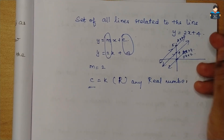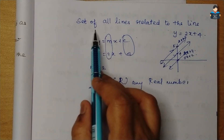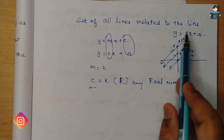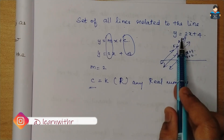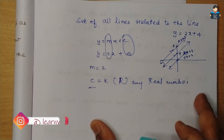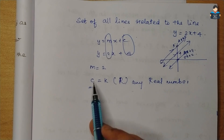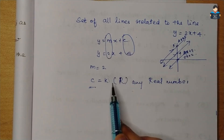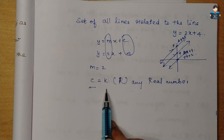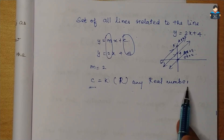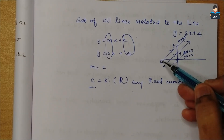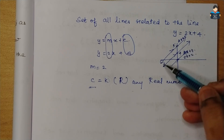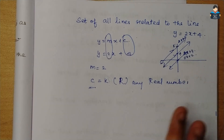Any real number you substitute in place of c will give a line parallel to y = 2x + 4. So the set of all lines related to y = 2x + 4 is {y = 2x + c : c is a real number}, where you substitute c equal to any real number k, and the lines will be related, that is, parallel.